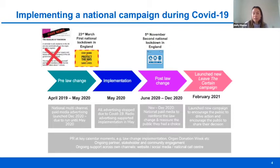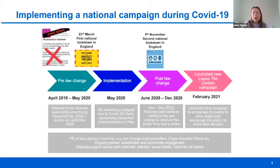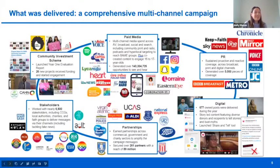We'd seen a lot of misinformation circulating in January, so we made the decision to use really trusted sources to deliver our message rather than social media where things can easily be misunderstood. The campaign resumed from Organ Donation Week in September 2020, with national paid media advertising resuming in November to reinforce that the law had changed and remind people they still had a choice. In February 2021 we launched our new campaign to drive action.